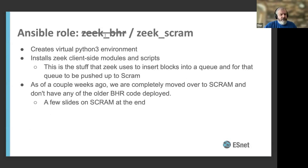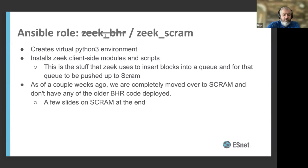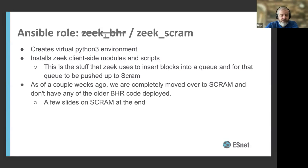Third, we have roles for Zeek BHR and Zeek SCRAM. These are for setting up automated filtering of malicious traffic — they set up the Python environment and client-side modules and scripts needed to do those things. As of a couple of weeks ago, we're no longer using the old BHR code most of you are probably familiar with. We're now using something called SCRAM, which we built in-house, and I've added a few slides at the very end to cover what SCRAM is.